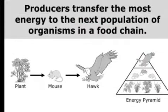Producers transfer the most energy to the next population of organisms in the food chain. They can provide food to the next generations.